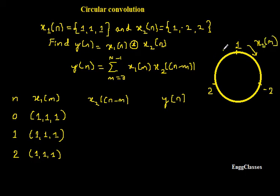If you read it other way round, it is x2(-m). So it is circularly folded sequence. So what I want now, if I put n equal to 0, it is x2(-m). So hence it will be {1, 2, -2}. That would be the sequence for x2(-m).